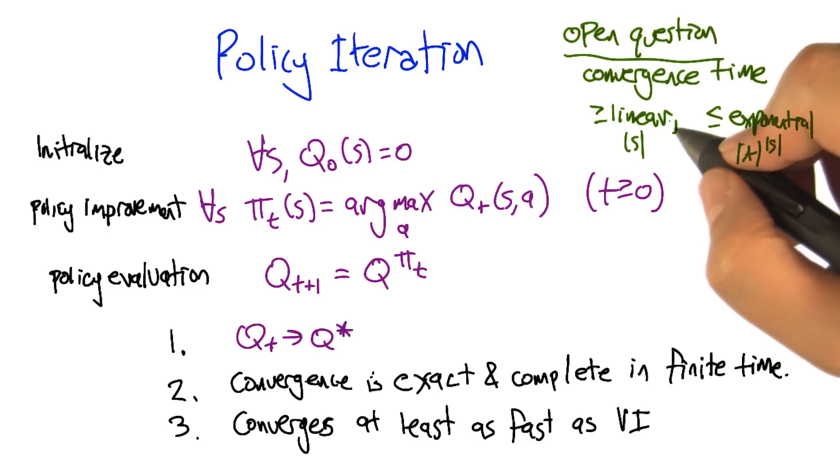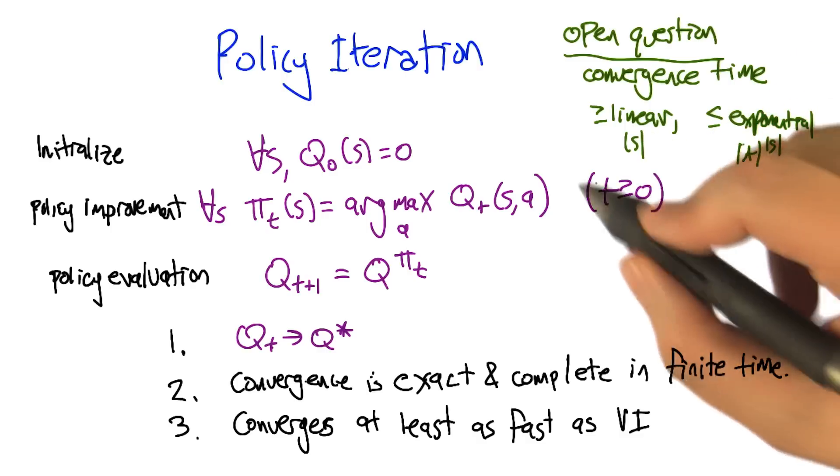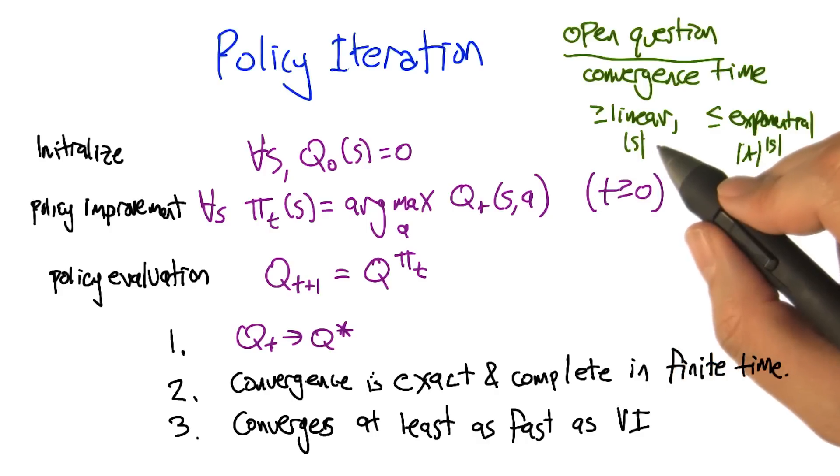but it turns out to be fairly weak. We know that there are some MDPs such that the number of iterations that policy iteration takes is linear. It's at least as large as the number of states in the MDP. Though we can't, I don't think anybody's actually shown, like, two times the number of states.